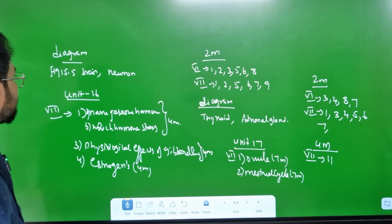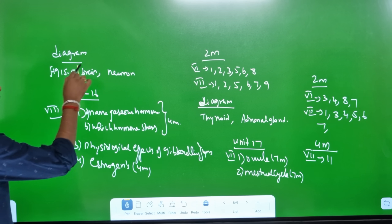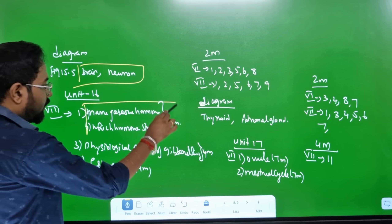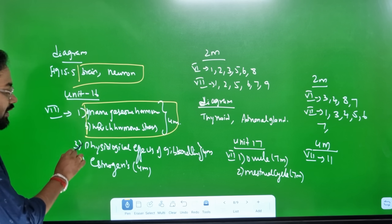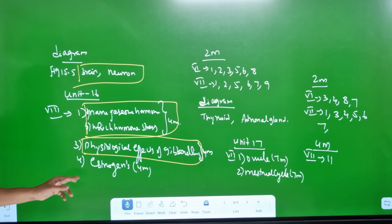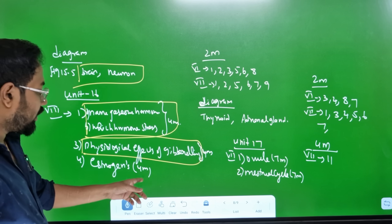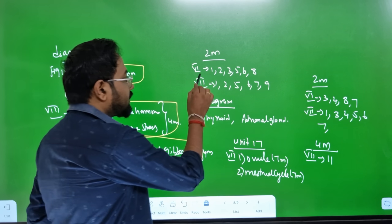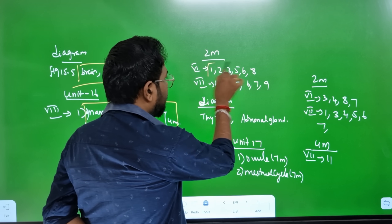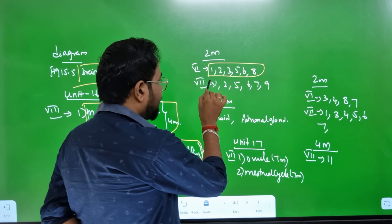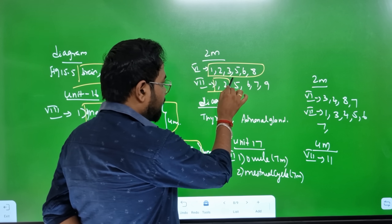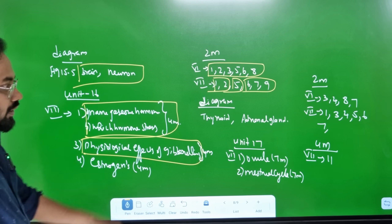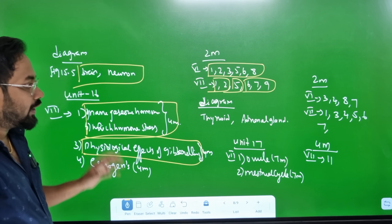Unit 16 - we can see the diagram. Unit 15: brain and neuron. Unit 16: name of gaseous hormone, which hormone, stress hormone - this is 4 marks, first question, number 8, third question. Physiological effects of gibberellins - 4th question. Estrogen produced - 4 marks. 2 marks in Rome 6, A, B, C - 7 marks. 7th Roman number: synthetic auxin, bolting, chemical messenger. Diagram - 2 marks.